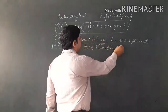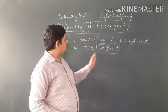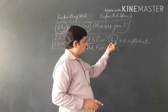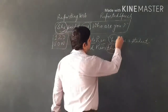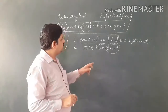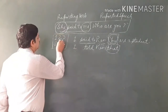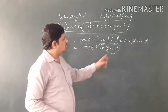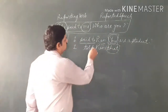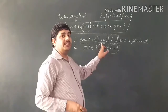When we connect with the reporting word for simple sentences, the word 'you' — which is second person — changes according to the object. 'You' is in the second person position, so it is replaced by the appropriate object pronoun. For example, if 'he' is the object, 'you' changes to 'him'.